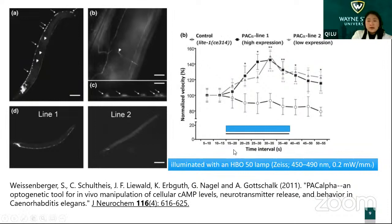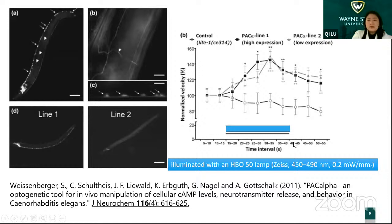As an example, after shining with blue light — transfecting C. elegans with PAC alpha on motor neurons — the whole C. elegans movement is changed. This means the PAC is working: shining the light increases intracellular cyclic AMP concentration in neurons and changes neuron excitability.